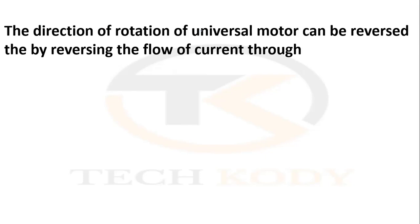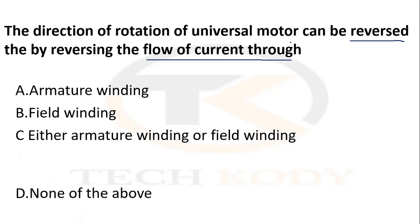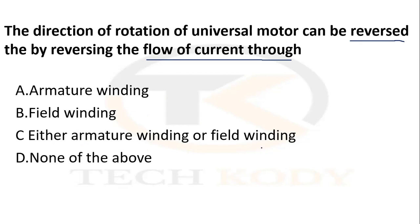The direction of rotation of a universal motor can be reversed by reversing the flow of current. The options are: armature winding, field winding, either armature winding or field winding, or none of the above. The direction of rotation can be reversed by reversing either the armature winding or the field winding.